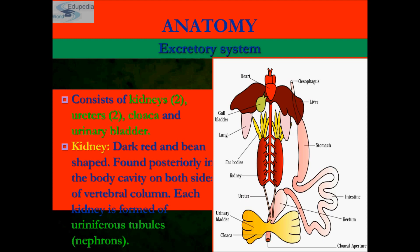Two ureters emerge out from each of the kidneys. In male frogs, the ureter acts as a urinogenital duct which opens into the cloaca, which is the outside opening.